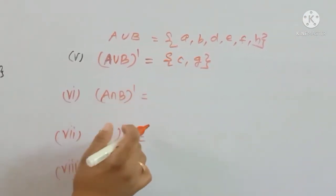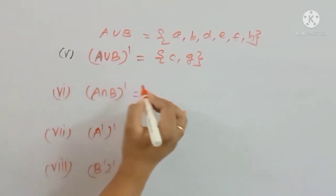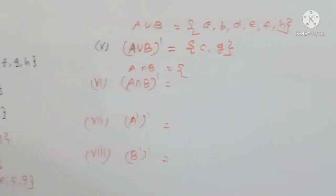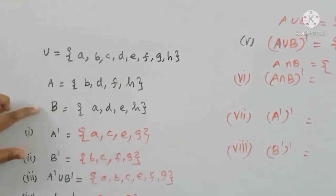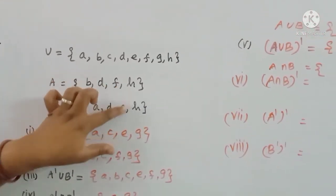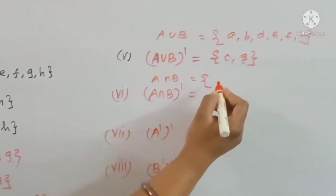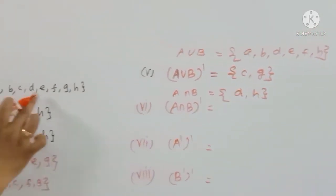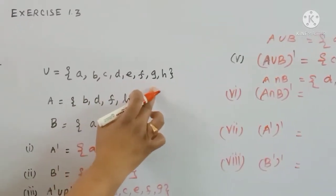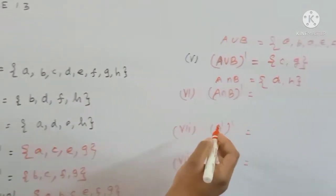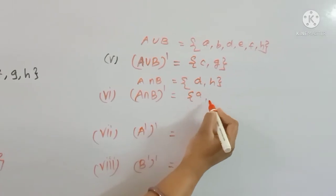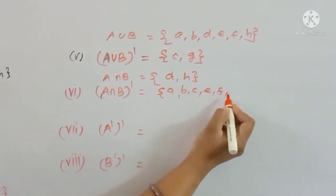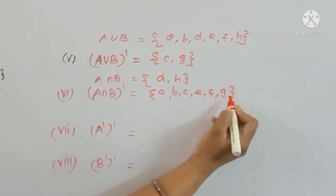First, find A intersection B — the common elements of A and B. The two common elements are D and H. A contains: A, D, C, D, E, F, G. H is on the same side.